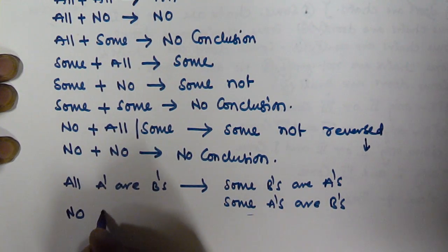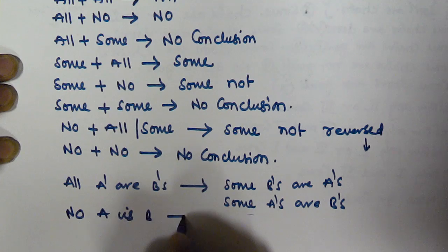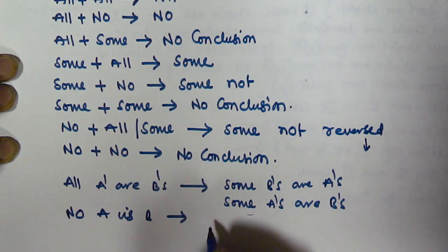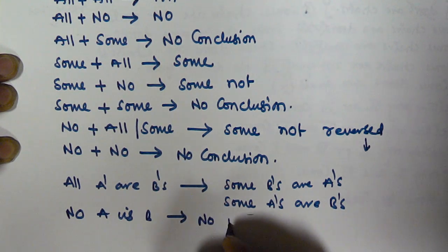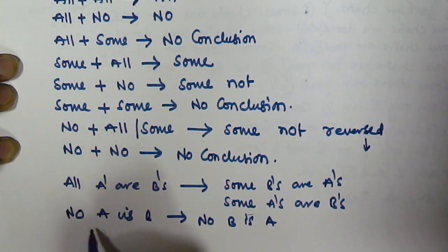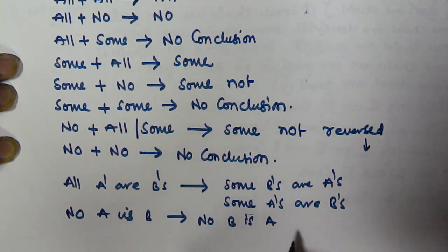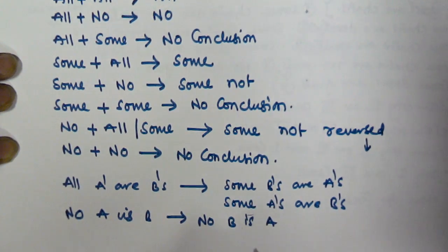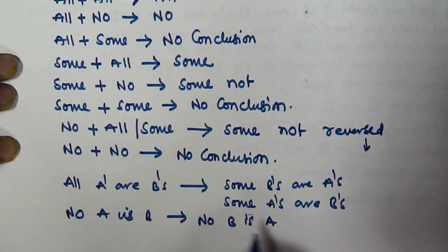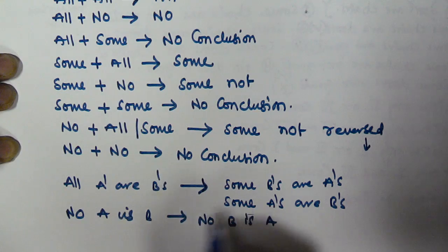Whenever there is a statement like 'no A is B', from this we can conclude that 'no B is A' also. So whenever there is 'no A is B', we can conclude 'no B is A'.